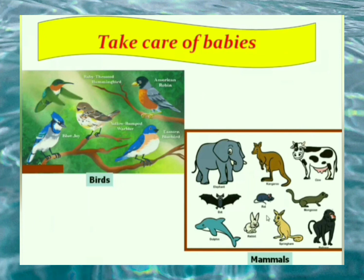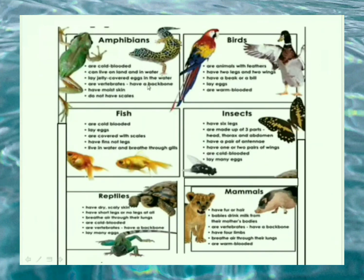Birds and mammals take care of their babies, so such animals have a large number of surviving young ones. In this chapter we have learned that all animals produce young ones of their own kind — this process is called reproduction. There are two ways animals reproduce: by laying eggs and by giving birth. Animals that give birth to young ones are called mammals. Amphibians, birds, fishes, insects, and reptiles all lay eggs, while mammals give birth to young ones. Birds and mammals also take care of their babies, because of which they have a large number of surviving young ones.